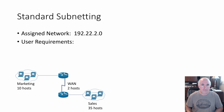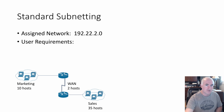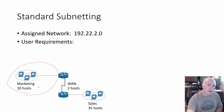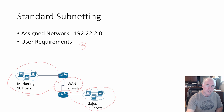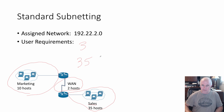Standard subnetting. If we had an assigned network — let's take this Class C network — and some user requirements, you may not be used to seeing the user requirements presented in this way. Normally we've had the user requirements written down. This is just a diagram where you have to find how many subnets. There are three of them. I would need three subnets, and then find the largest group of hosts. Since I'm building all subnets the same size, I need to accommodate the largest group — Sales with 35 hosts.